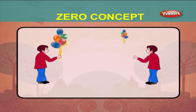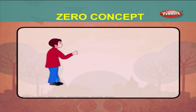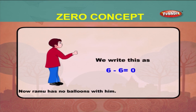Let us see one more example. Ramu has six balloons with him. All the six balloons fly away from him. Now Ramu has no balloons with him. We write this as six minus six is equal to zero.